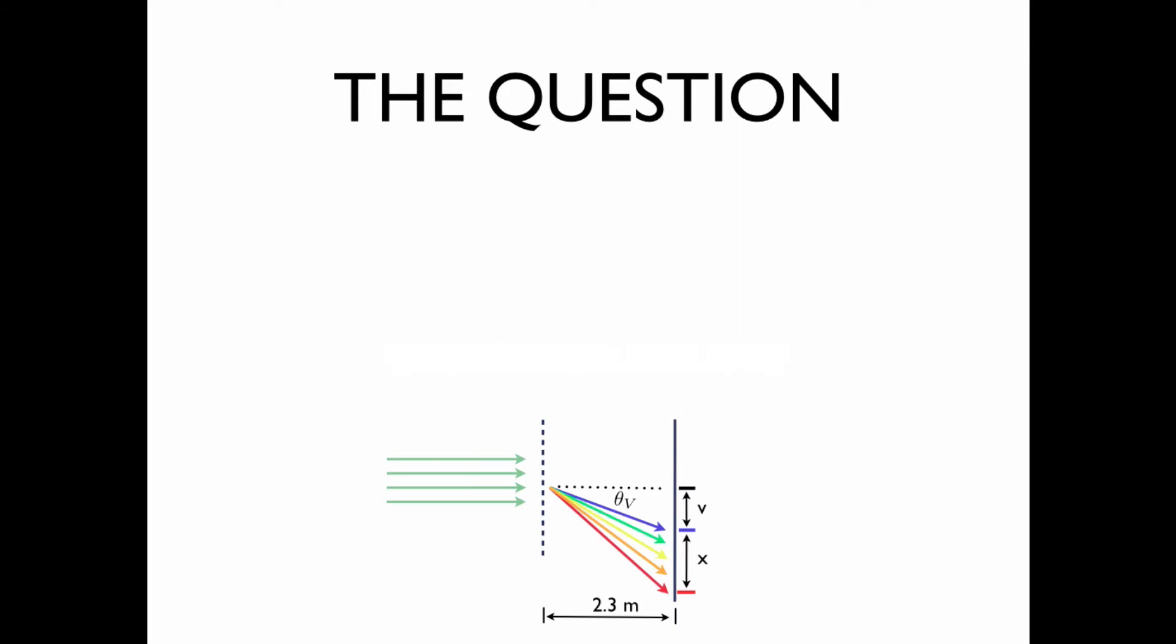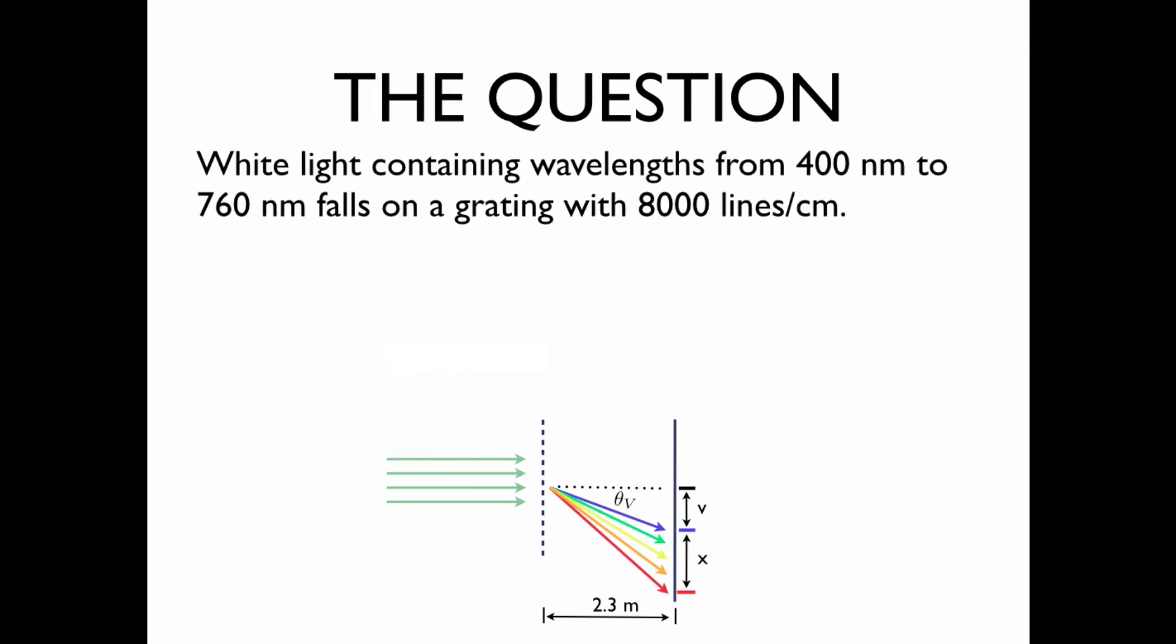The question: White light containing wavelengths that range from 400 nanometers to 760 nanometers falls on a grating with 8000 lines per centimeter.